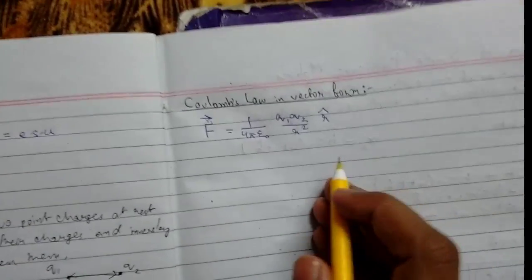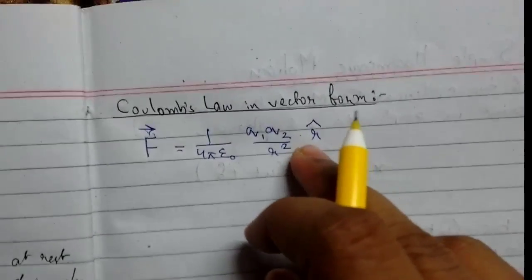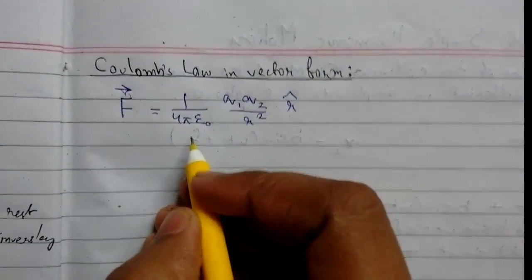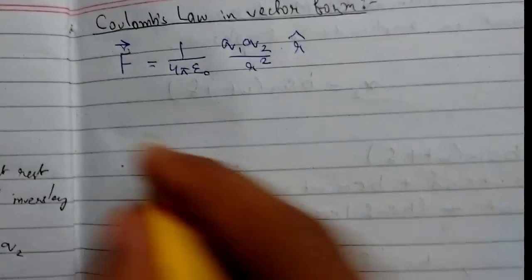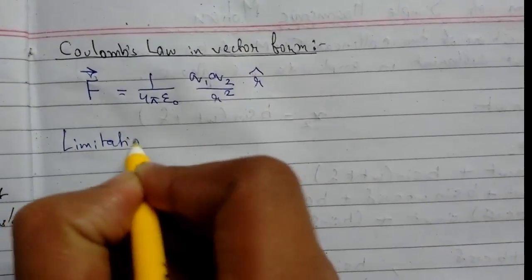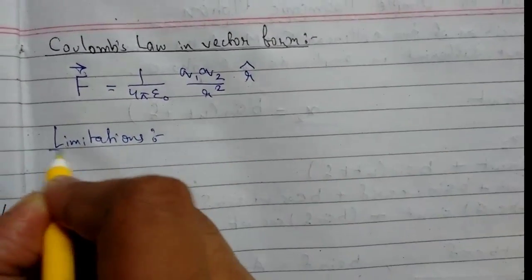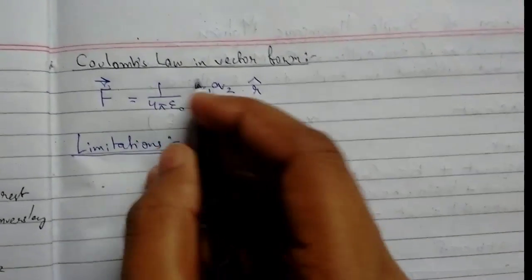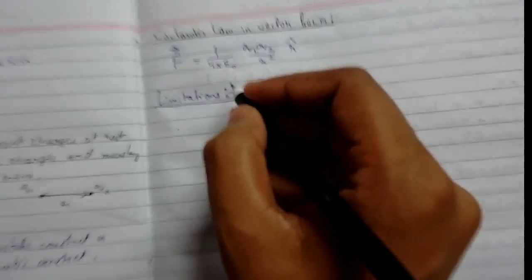This R unit vector denotes the direction of the radius or distance between the forces. Now we will see some limitations of Coulomb's law. There is a history here - Coulomb was inspired by Newton's gravitational law.